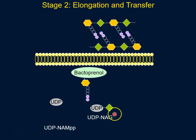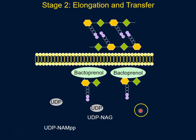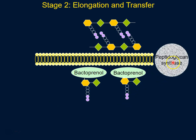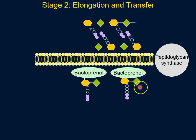Now we have the complete building block — the two sugars NAM and NAG — where NAM has the pentapeptide attached to it. There's an important enzyme called peptidoglycan synthase, and what it does is take this complex of the two sugars and flip it outside.